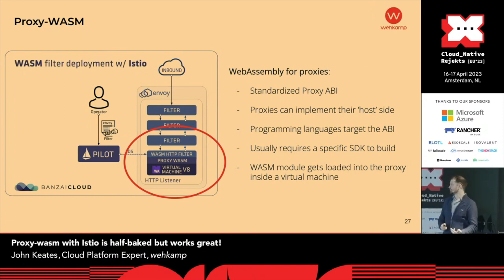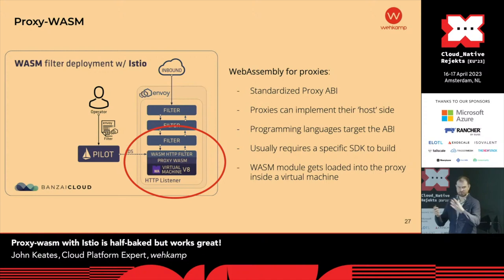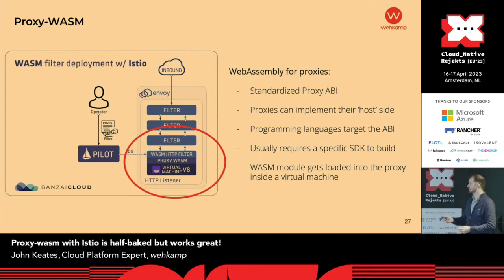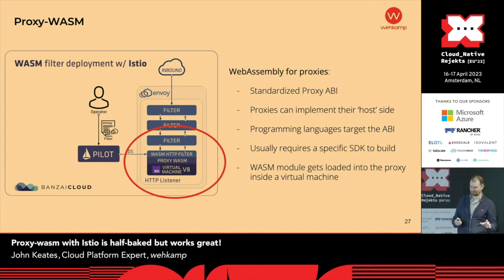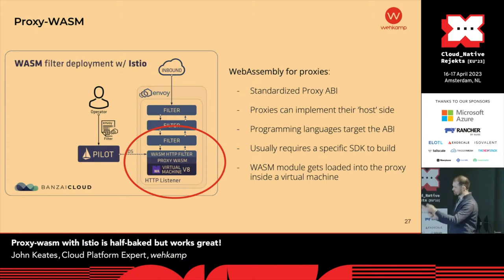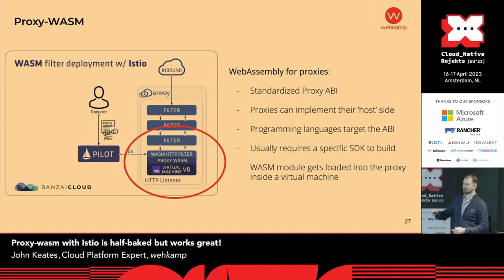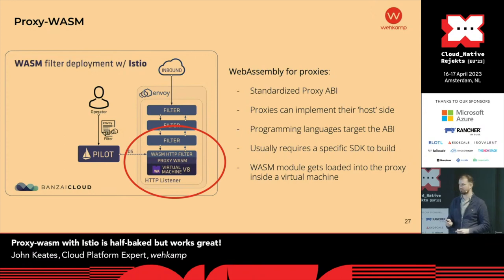The proxy part of Proxy Wasm is essentially an ABI — an application binary interface — which means that as long as you adhere to the standard, you can use this specification. On the Envoy side, you have the Wasm filter which implements the host-side virtual machine with the API needed to use these modules. On the module side, you need specifically Proxy Wasm ABI-compatible WebAssembly. What happens is your filter starts up, loads its configuration for all its filters, and one of those might be a WebAssembly filter. It then loads it dynamically — not statically pre-compiled. You just give it a little configuration like where to find your Wasm module, and you can even specify when it needs to happen.